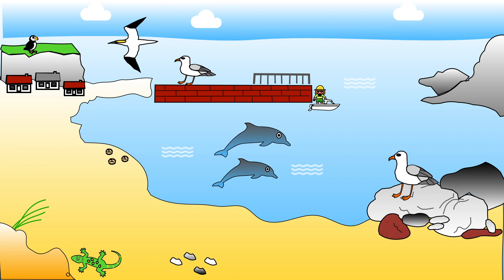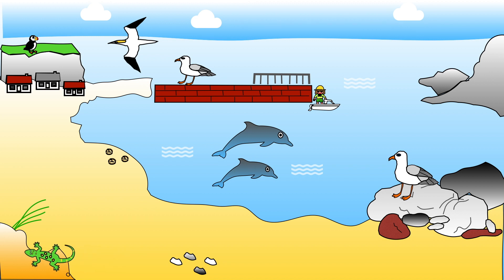Many sandy beaches have sand dunes. These are hills or mounds of sand formed by the wind. Spiky marram grass is often found growing on the dunes. If you are lucky, you might even see a lizard or two.